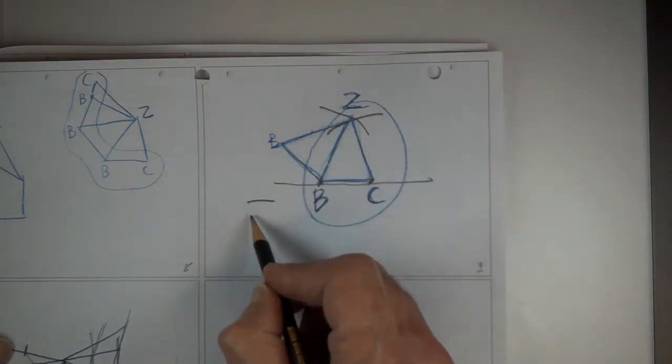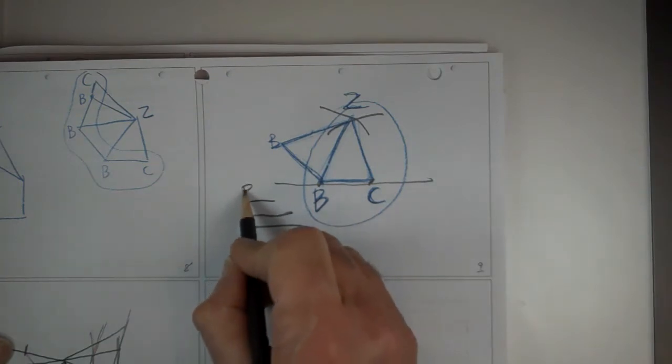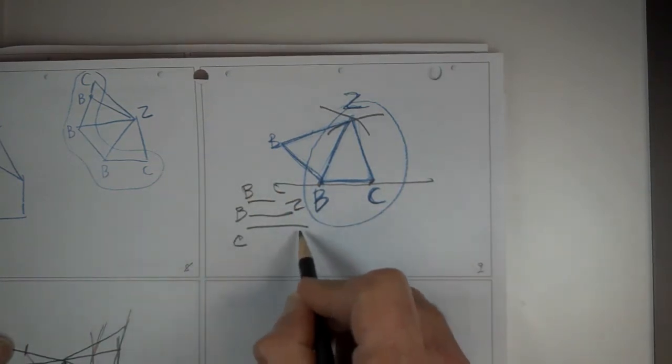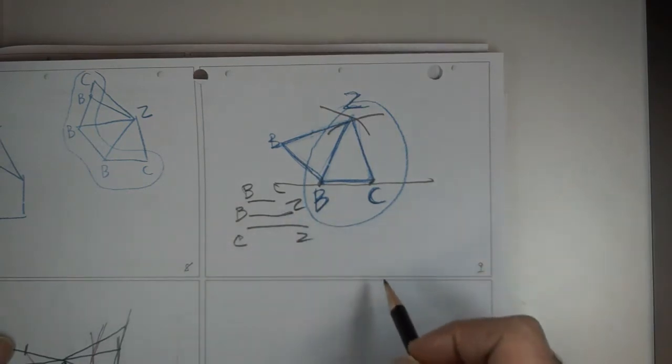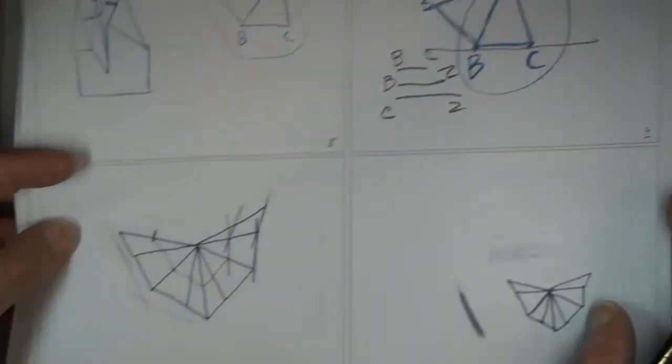And you knew the dimensions, right, which would be BC, BZ and CZ. If you know three known sides of a triangle, that's the only triangle you can possibly construct with it. You cannot make anything else.